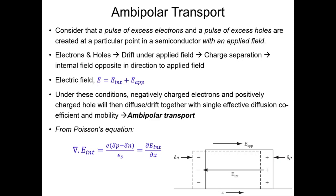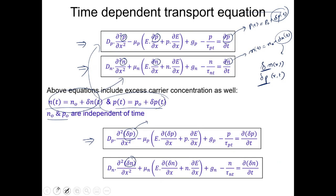I mentioned at the beginning that excess electrons and excess holes move together. In the previous slide I showed two separate equations — one for excess electrons and one for excess holes. The question is how do we unify all of this? Before we unify, let us see the reason why they basically move together.